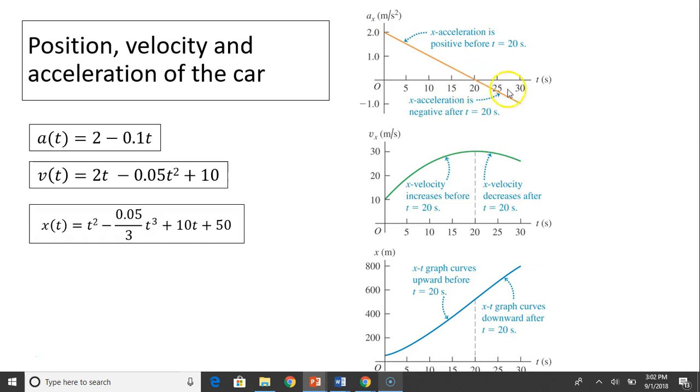After t equals 20, acceleration becomes negative. So after t equals 20, the slope of v(t) becomes negative. And before 20, slope of v(t) is positive. Take a look at x(t). So before 20, acceleration is positive, so the curve should curve upward. After 20, the curve should go downward.